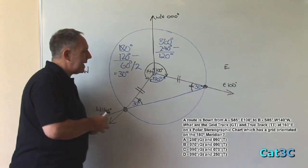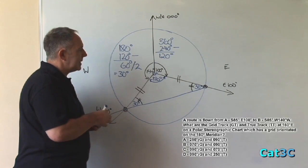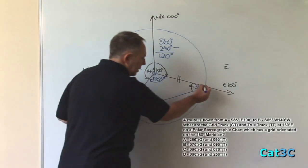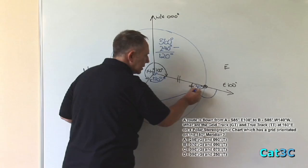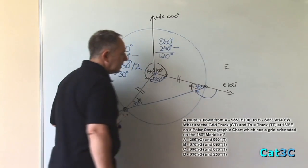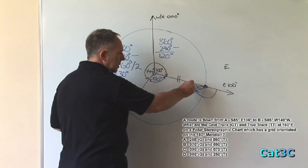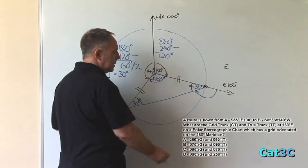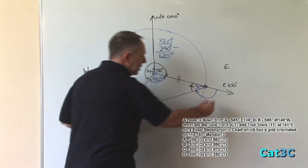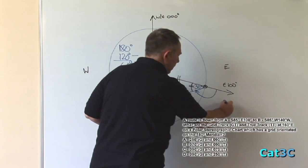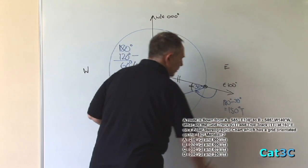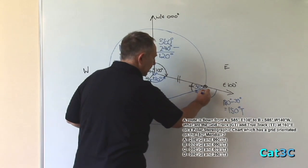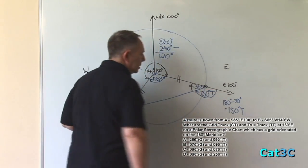We can now calculate the value of the track at A. There's position A, move to north, go clockwise and stop at the track angle. Half of a circle, one side of a line is 180 degrees minus the 30 equals 150 degrees true. So the value of this angle here is 150 degrees true.